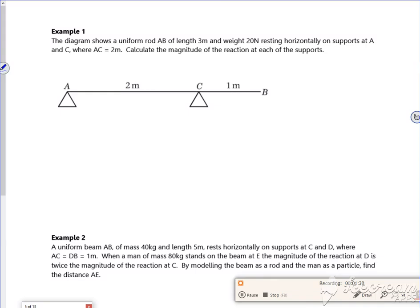So let's have a look at an example here. The diagram shows a uniform rod AB of length 3 meters and weight 20 newtons. So this piece of information tells me that at 1.5 meters, I've got 20 newtons acting down. So let's have a look. So 1.5 meters is approximately there, say.